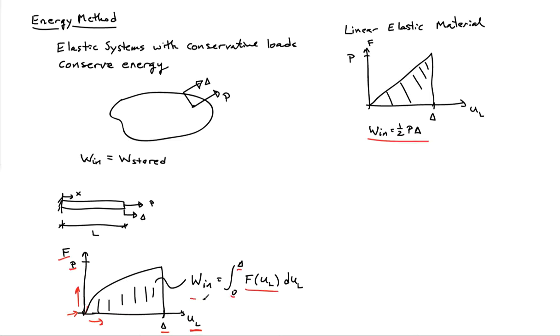But in general, you have to use the more complicated expression with the integral. Now, the work stored—let's look at the work stored on a per unit volume level. The area times the length of the bar is the volume of the bar. So if I divide the work stored by AL, I'll have the work stored per unit volume. We'll call that little W.